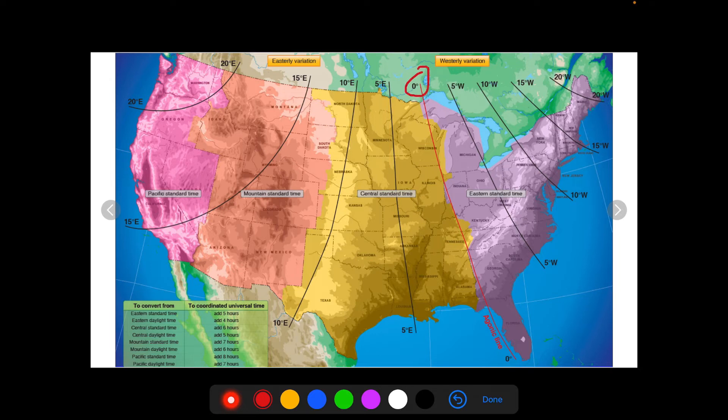And then right here, we have zero variation going through the United States on the east side of Michigan down through the east side of Illinois, the middle of Kentucky, Tennessee, and then through the border of Alabama and Georgia. So here, you don't have to correct anything if you're flying along on this line, close to this line. You don't have to correct anything going from true to magnetic.